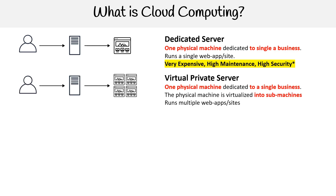Then what came along was virtual private servers, where we still had one physical machine dedicated to a single business. We figured out how to take that physical machine and virtualize it into sub-machines. Now we could fully utilize that physical server by running multiple apps — we didn't have to buy four different servers for four different apps; we could easily run four web apps on four virtual sub-machines.